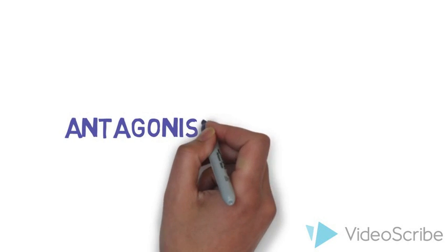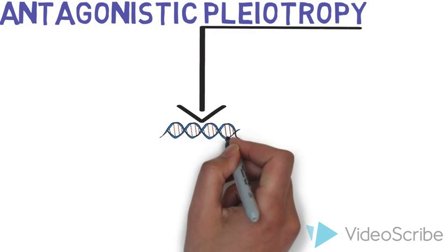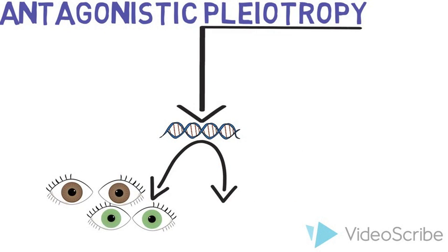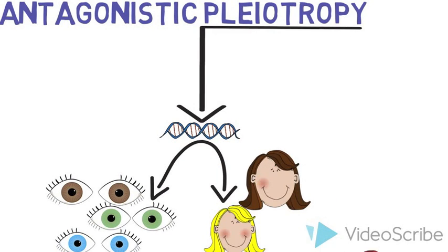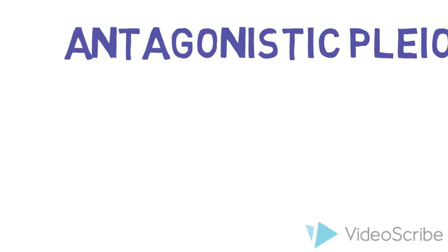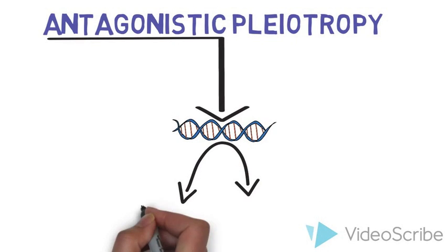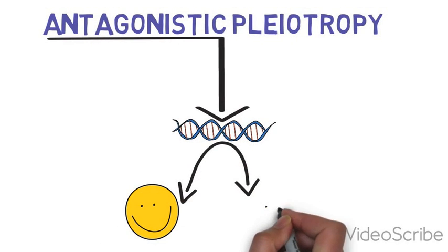A second hypothesis is that of the antagonistic pleiotropy hypothesis. Pleiotropy is a phenomenon where a gene controls for more than one trait in an organism. Antagonistic pleiotropy is when one gene controls for more than one trait, but one trait is beneficial to the organism while the other is detrimental.